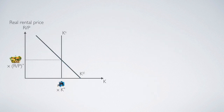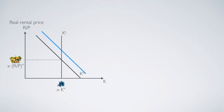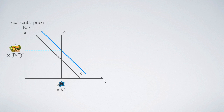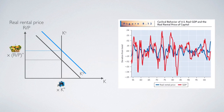We start by understanding the capital rental market. When those things happen and increase capital demand, it would increase the real rental price of capital. Therefore, when output increases, the real rental price of capital also increases. Our model predicts these two variables — the real rental price of capital and output — move together in the same direction, implying that the real rental price of capital is procyclical, which matches the picture we saw before.